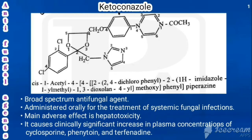The first drug is ketoconazole. In the structure of ketoconazole, it has a piperazine ring where the first portion is connected with acetyl and the fourth portion is connected with phenyl. The fourth portion of phenyl is connected with methoxy, which is connected with a 5-membered ring called dioxolane — a 5-membered heterocyclic ring having 2 oxygens at positions 1 and 3, so it is called 1,3-dioxolane.